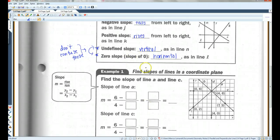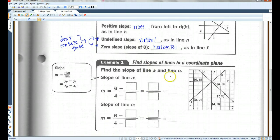For example, find the slope of line A and line C. Let's take a look at line A. First thing you want to do, pick two points on this line. We could pick this one and this one. Both of these are on line A. The rise would be the Y values, six and two. So I'm going to have six minus two.